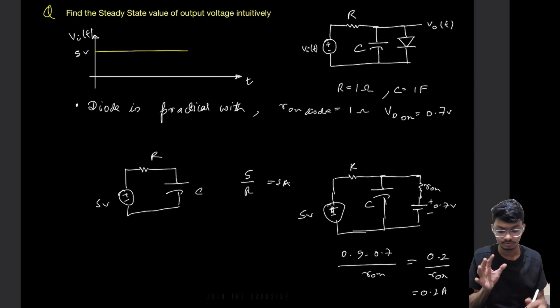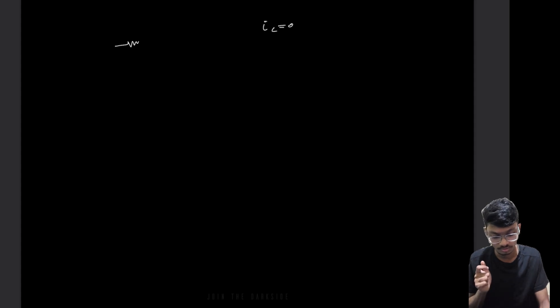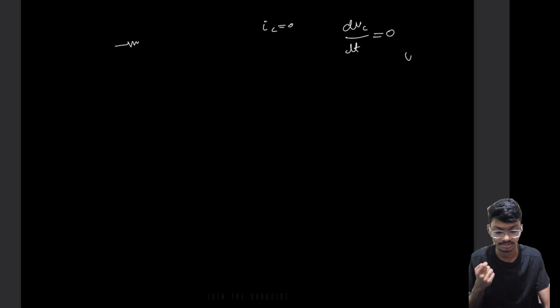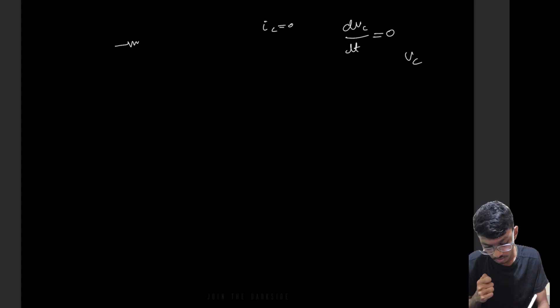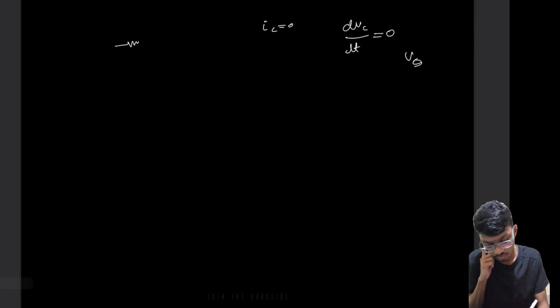The cap will charge until steady state, which is when the capacitor is open-circuited — no current flows through it. At steady state, IC = 0, therefore dVc/dt = 0, meaning the voltage is no longer changing. This steady-state voltage is also the output voltage we need.